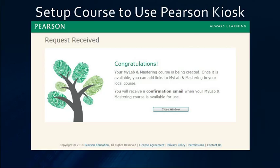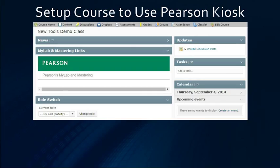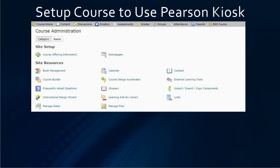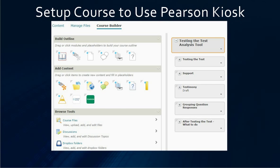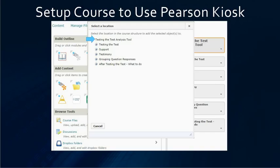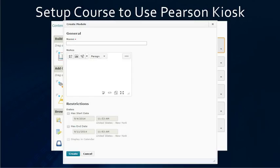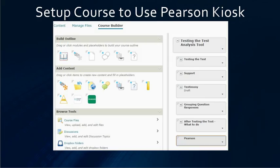Close this window and all other popups that you have still open. Now we are back in D2L again. Click on edit course and go into the course builder. If you haven't set it up, you want to make a placeholder, tell it where to go, give it a name, and create it. Then we are going to click on the Pearson icon.